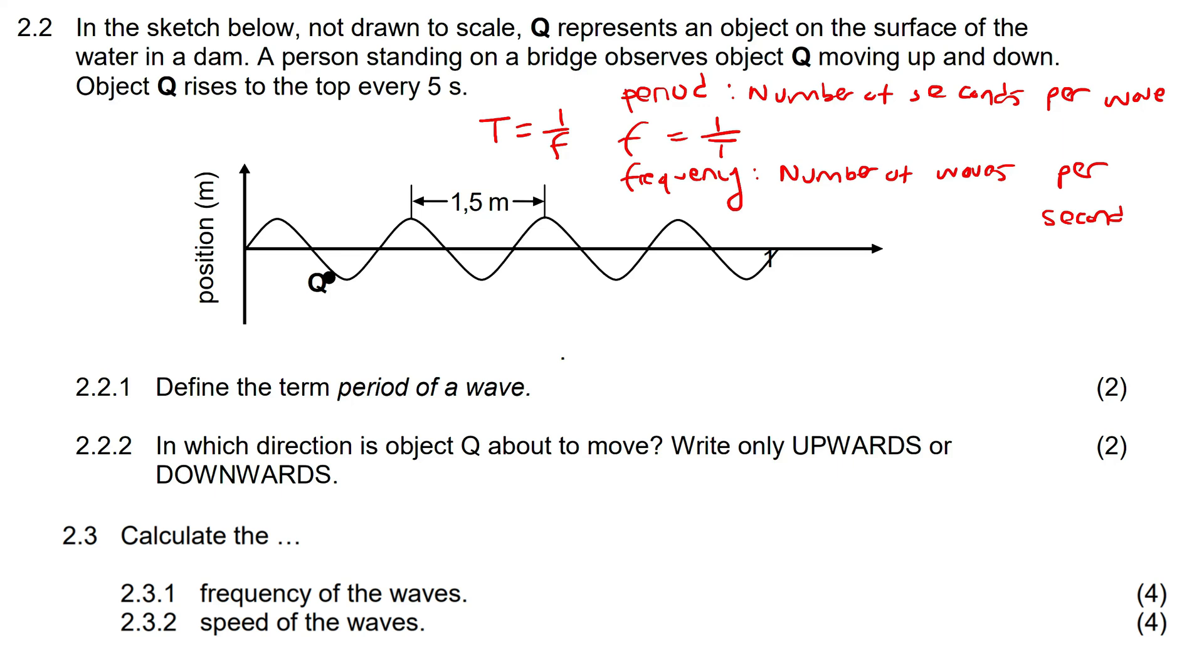Okay, so what is the period of a wave? It is the time taken to complete one oscillation. Oscillation just means one cycle, one wave, just like we said here, for one wave. Okay, so there we go.